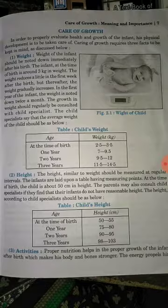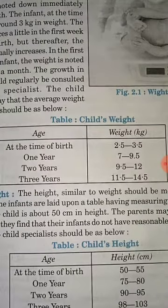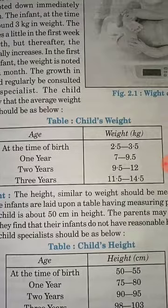As soon as a child is born, his weight is noted down. The average weight is around 3 kg. The weight reduces a little in the first week, but after that it gradually increases. You can see a chart here — this is age and this is weight. At the time of birth, a healthy child weighs 2.5 to 3.5 kg. At one year, weight reaches around 7 to 9.5 kg. At two years, it is around 9.5 to 12 kg. At three years, the weight is around 11.5 to 14.5 kg.